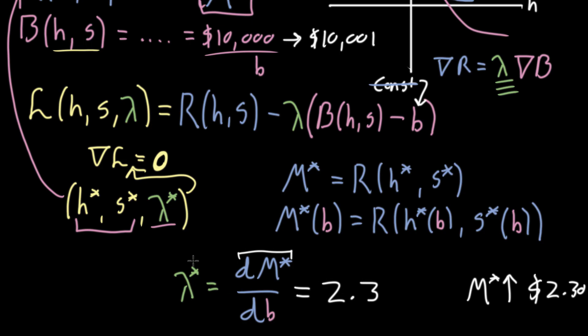And that's information you'd want to know. If you see that this lambda star is a number bigger than one, you'd say, hey, maybe we should increase our budget. We increase it from $10,000 to 10,001, and we're making more money. So maybe, as long as lambda star is greater than one, you should keep doing whatever it takes to increase that budget.